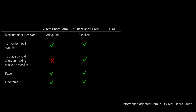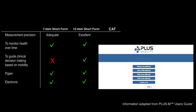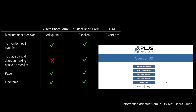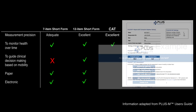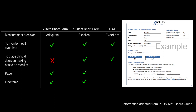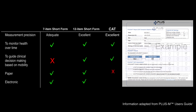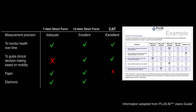The CAT automatically selects questions based on patient responses. It also offers excellent measurement precision and is recommended when making clinical decisions regarding mobility. It is only available in electronic format.